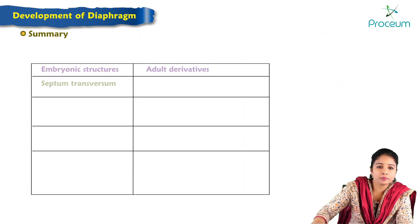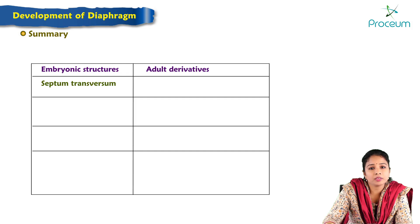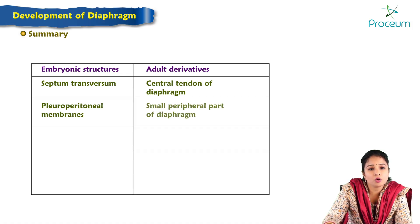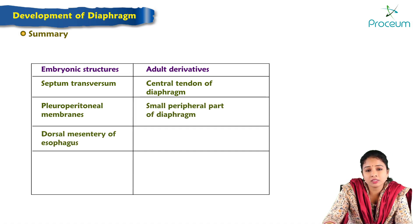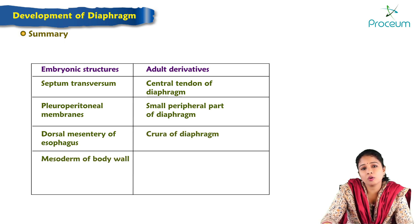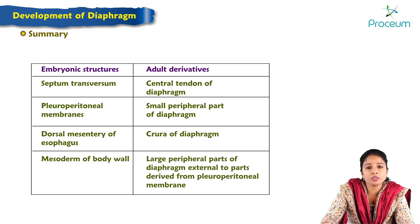Summary: Septum transversum forms the central tendon of the diaphragm. Pleuroperitoneal membranes form a small peripheral part of the diaphragm. Dorsal mesentery of the esophagus forms the crura of the diaphragm. The mesoderm of the body wall forms the large peripheral parts of the diaphragm, with the external two parts derived from the pleuroperitoneal membrane.